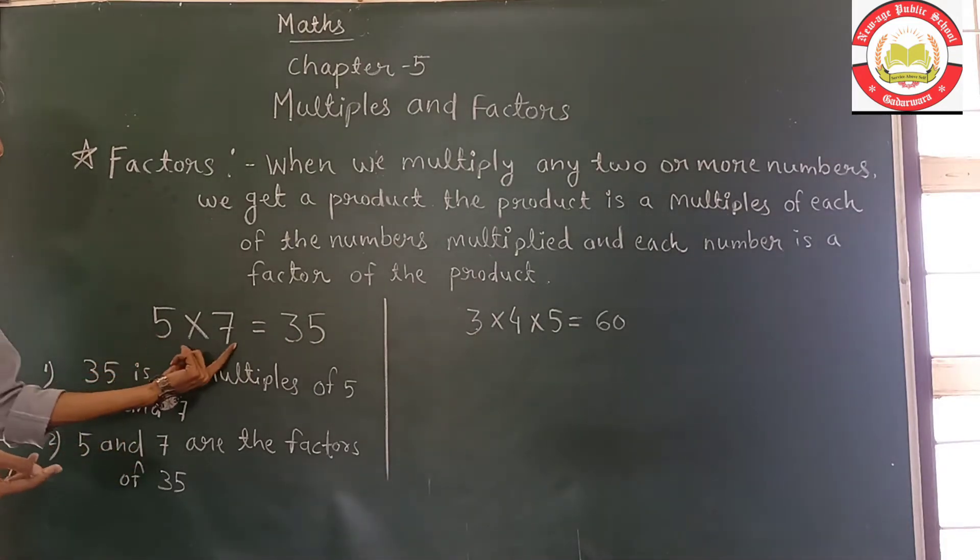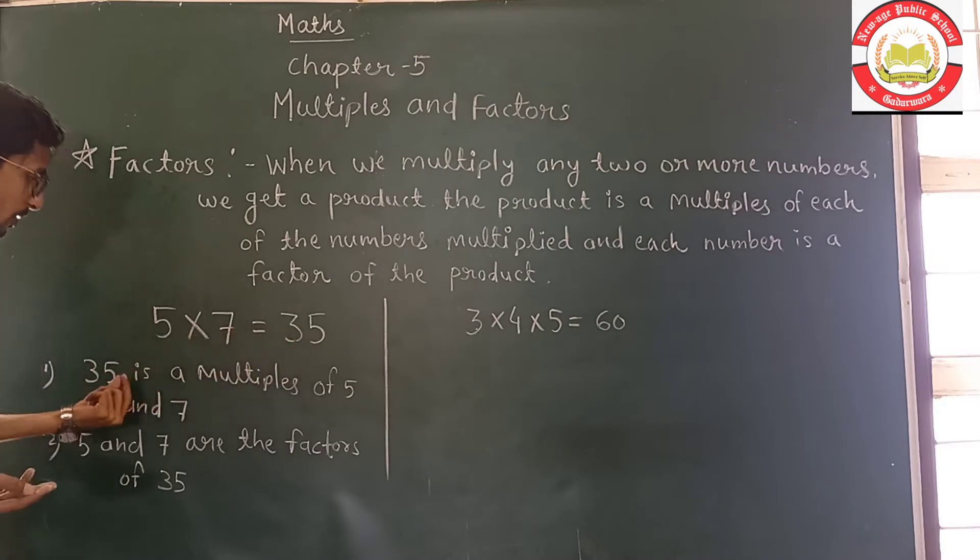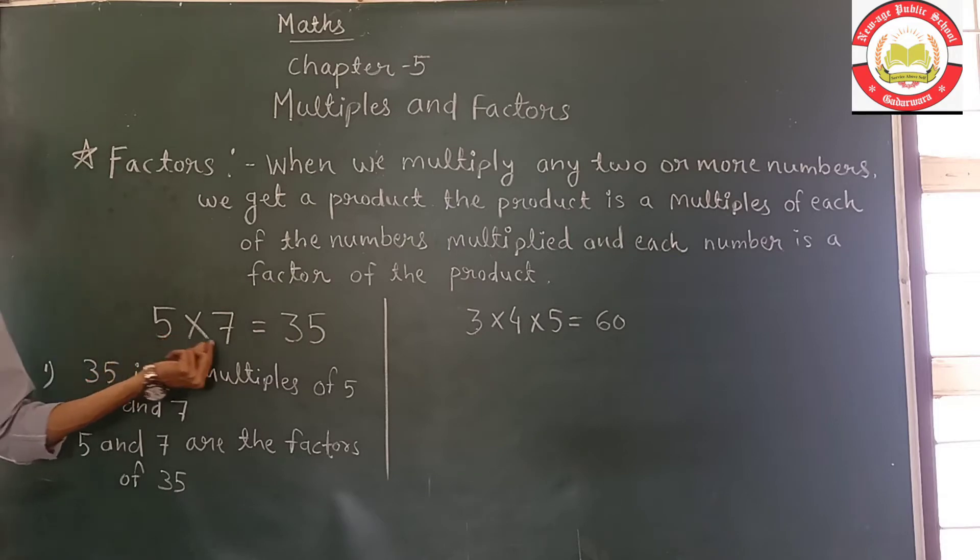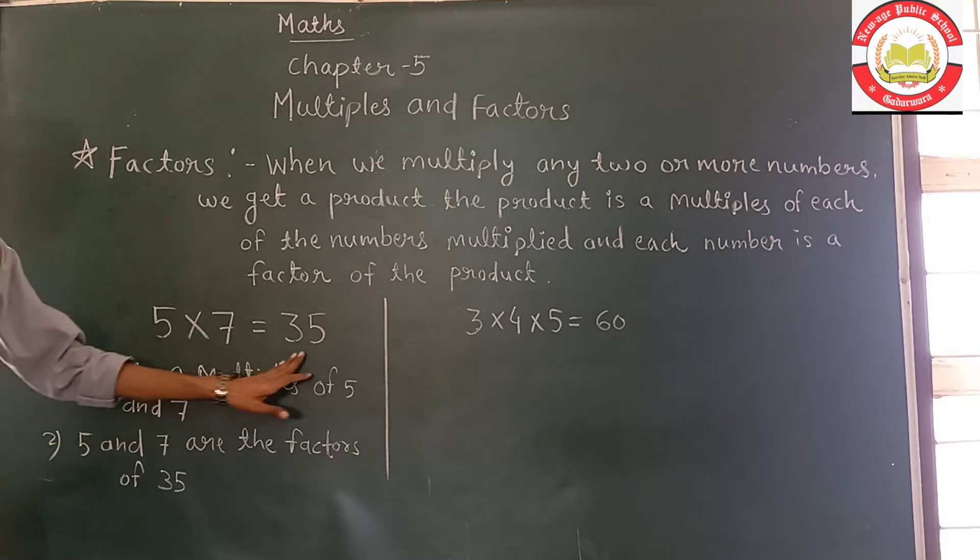For example, 5×7 equals 35. So 35 is a multiple of 5 and 7. And 5 and 7 are factors of 35.